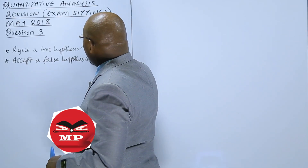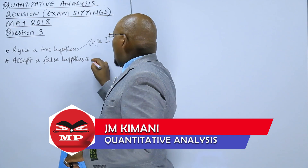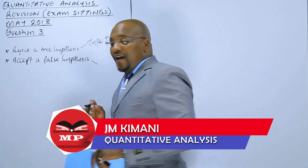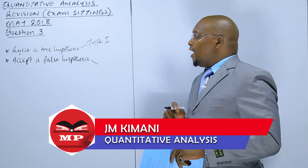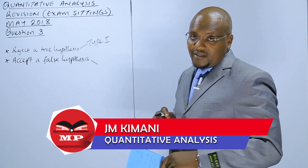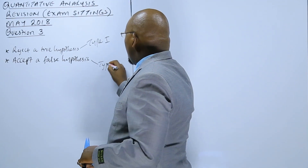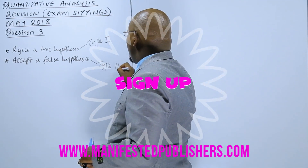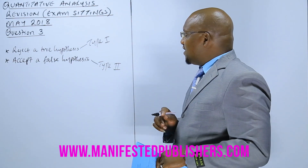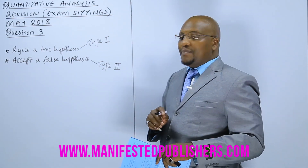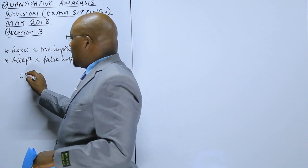This one is a Type 1 error. A Type 2 error is when you accept a false hypothesis — this is called a Type 2 error. There is what designates this Type 1 and Type 2, and there is what you call the confidence level.